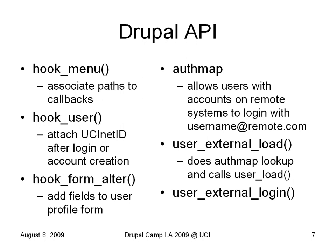So what are we looking at in Drupal? We'll use hook_menu to add menu items and callbacks for paths within Drupal. hook_user gets called when something happens to a user, and we're going to use that to notice when a user first logs in after authenticating with their UCI NetID. hook_form_alter is used to add fields to the user profile and user register forms. user_external_load does what's called an authmap lookup and then calls user_load. user_external_login finishes up your login — it's basically like posting the login form.